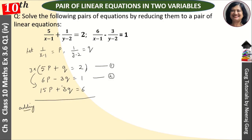Always remember, when we have two same signs, we subtract and change the sign. If one is plus and one is minus, then we add. After adding, these cancel out and we get 6p plus 15p, which means 21p that is equal to 7.